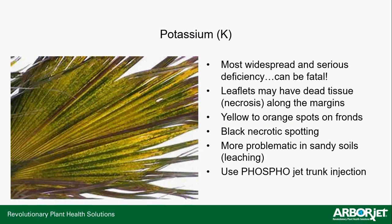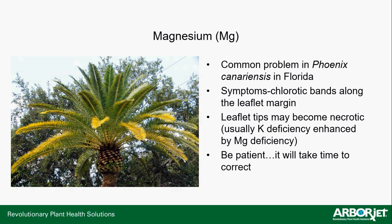PhosphoJet is great for preparing a plant for stress and helping it recover from stress. I'll talk about that more in the three-step program. Magnesium deficiency is seen a lot in Canary Date Palms in Florida. The older fronds get a very yellowing, chlorotic appearance — up close you'll see bands of chlorosis along leaflet margins. In advanced stages you'll actually see necrotic tissue along the leaf tips.